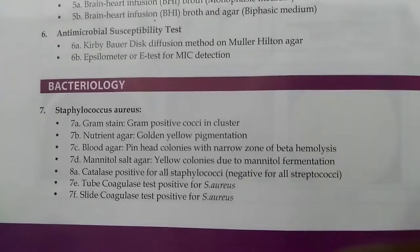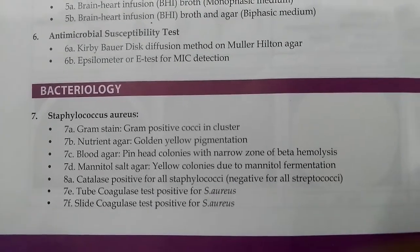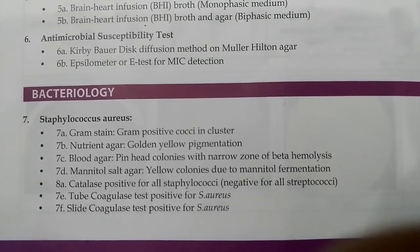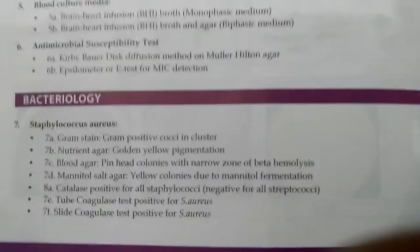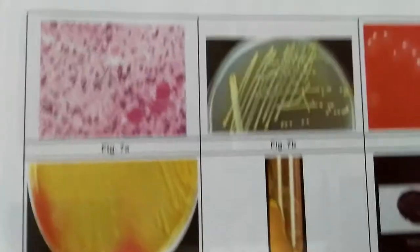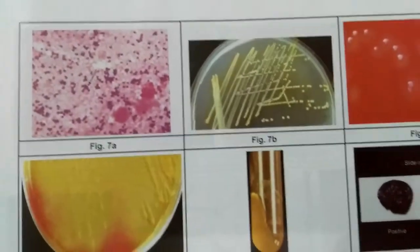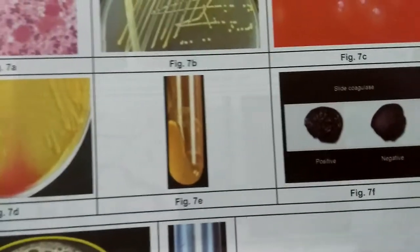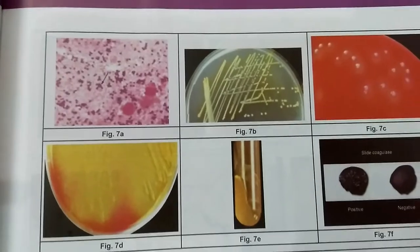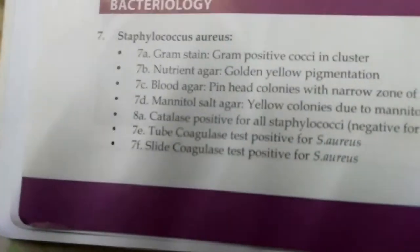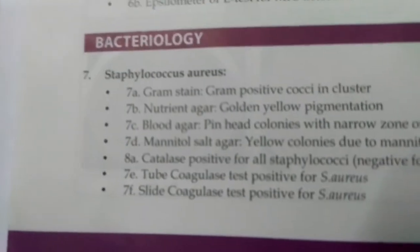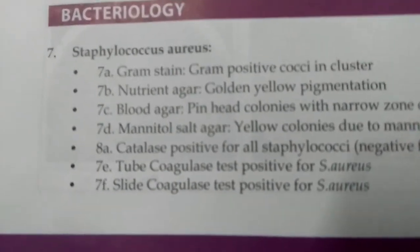Hello friends, we will now discuss the second part of image-based questions in microbiology. The topic is Staphylococcus aureus. A few images are given — 7a, 7b, 7c, 7d, 7e, and 7f. Please set your video quality to the highest level in the settings so that the images are clearly visible.